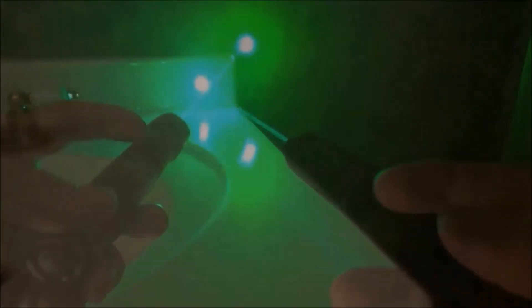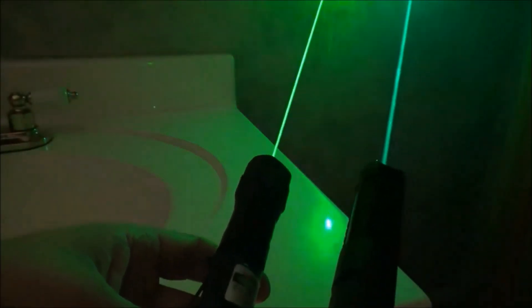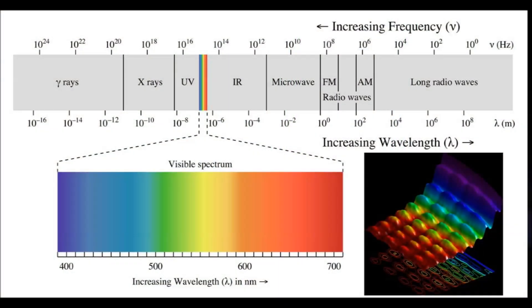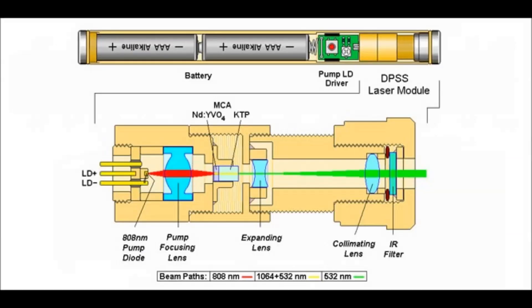Now some colors like this lime green that you see on the left hand side, 532 nanometers wavelength, can't be produced with a diode. We just don't have the technology of the diodes to produce that color yet, so they're produced by DPSS diode pumped solid-state lasers.